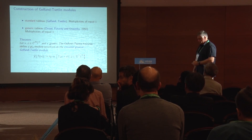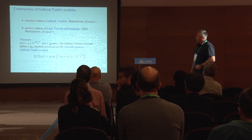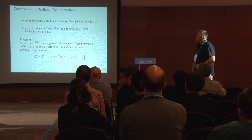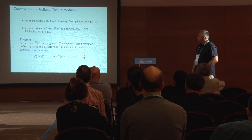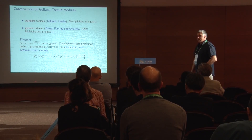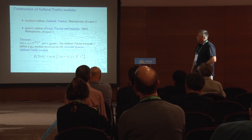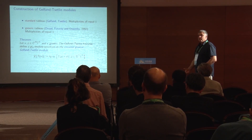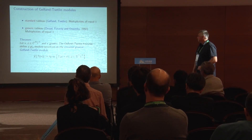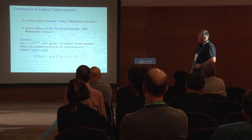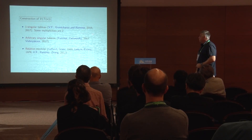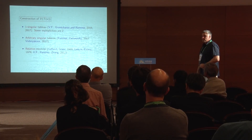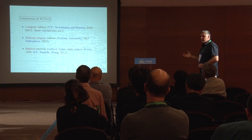Construction of Gelfand-Tsetlin modules is known in the following cases: for standard tableaux (classical result) and for generic tableaux (done in 1992), where multiplicities — the dimensions of components labeled by maximal ideals — are all one. For the generic case one generalizes the Gelfand-Tsetlin construction by taking the span of all tableaux shifted by all possible integers, giving a gl(n)-module with the same classical formulas. It took a long time to handle the singular cases in between, and only in 2016-17 did a breakthrough happen — after many years of nothing, suddenly results came in a huge flow.